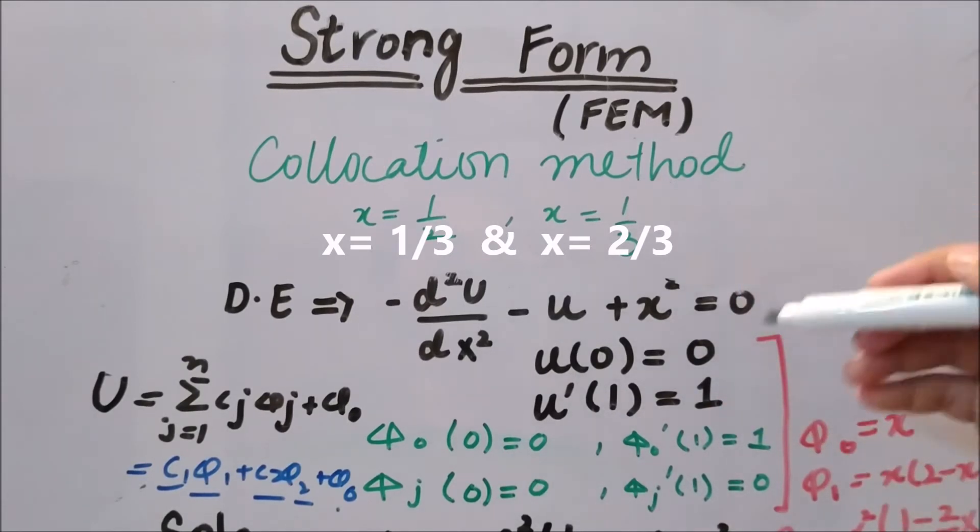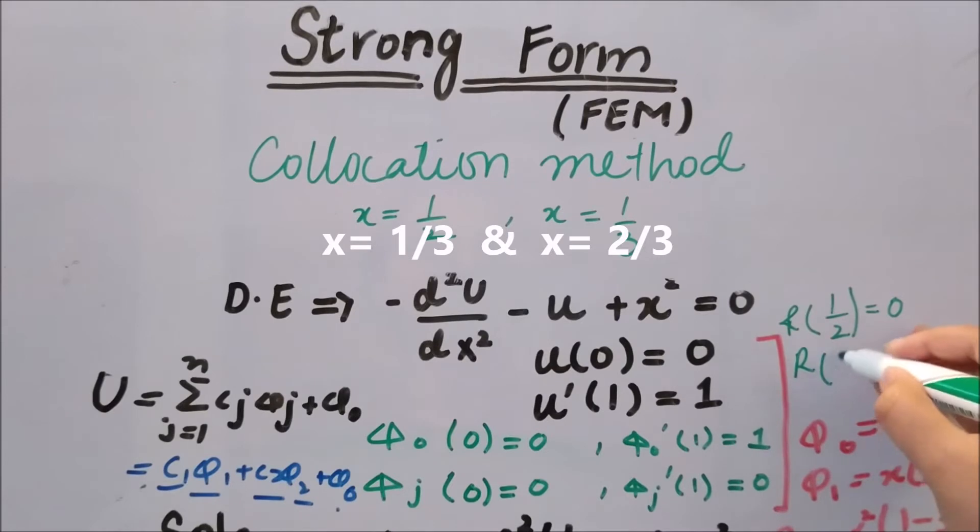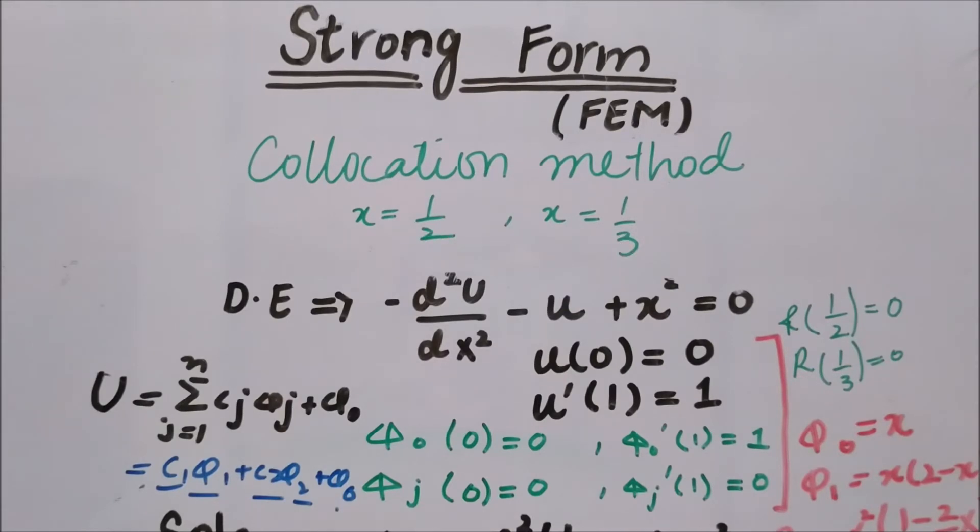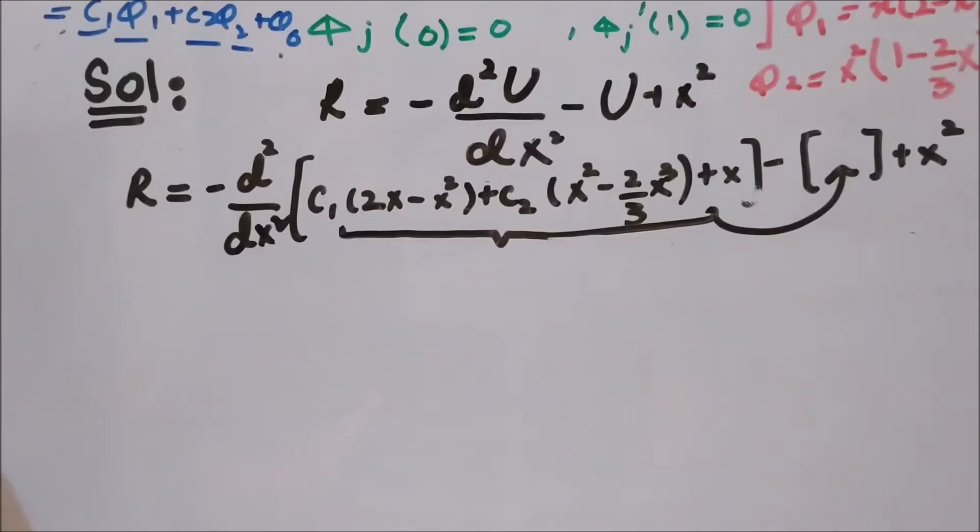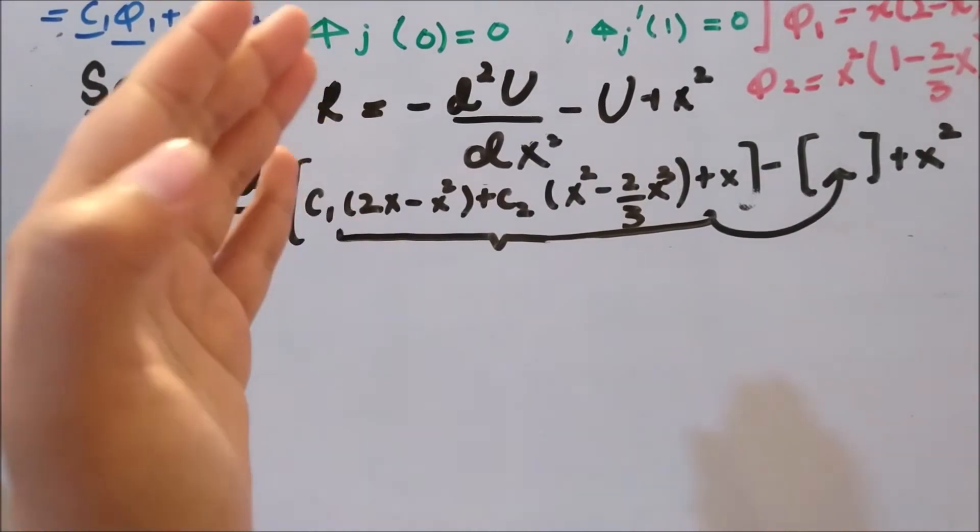R by definition at one-half should be equal to zero, and the residual at one-third is also equal to zero. So we have two collocation points, and we know our definition of residual according to this differential equation that we have. This is the residual from the very first video about the Petrov-Galerkin method.